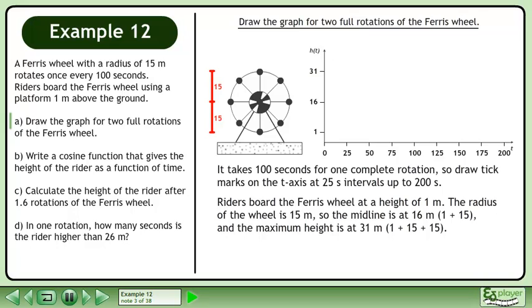Riders board the Ferris wheel at a height of 1 meter. The radius of the wheel is 15 meters, so the midline is at 16 meters, which is 1 plus 15, and the maximum height is at 31 meters, which is 1 plus 15 plus 15.